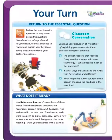What does it mean? Use a reference source. Choose three of these words from the selection: contaminated, hazardous, descent, compound, behavior. Find each word in the selection, then look up each word in a print or digital dictionary. Write a new sentence for each word that gives a clue to its meaning, and share your sentence with a partner.